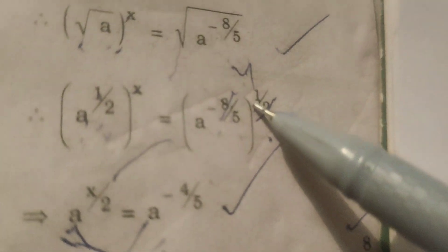8 times 1 is 8 by... 8 cancellation will get minus 4 by 5 is there. a power x by 2 equals to a power minus 4 by 5.